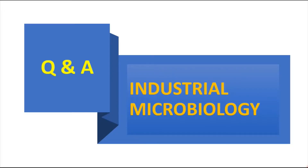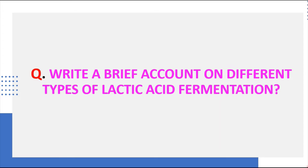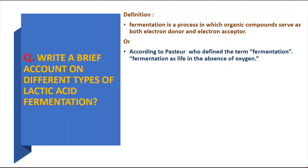In this series of question answers from industrial microbiology, we are going to discuss another question: write a brief account on different types of lactic acid fermentation. We'll begin with an introduction to fermentation. Fermentation is the process in which organic compounds serve as both electron donor and electron acceptor. According to Pasteur, fermentation is life in the absence of oxygen. Different sciences define fermentation in different ways, such as in food microbiology and industrial microbiology.